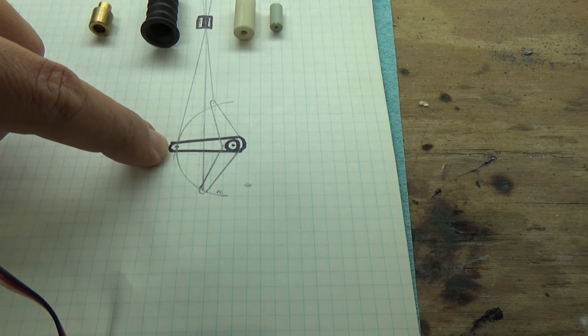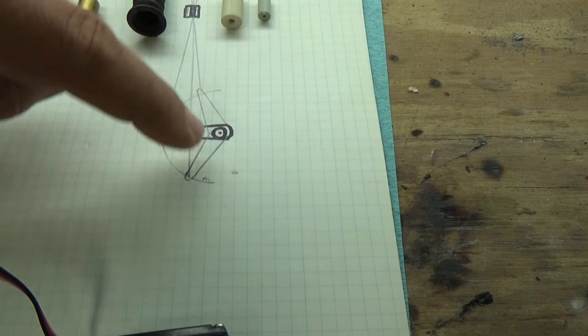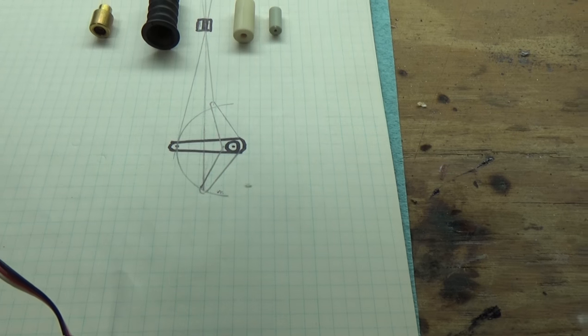So when the servo is centered it's going to be coming in at an angle, and at each throw it's going to be coming in as an opposite angle.